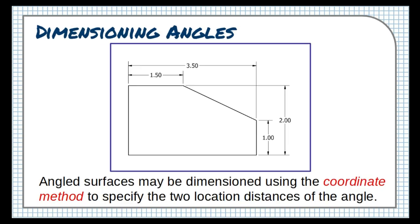When it comes to dimensioning angles, there are two accepted methods. This first method is called the coordinate method, in which both ends of the angled surface are located by their height and width. If the location of both ends of the slope are known, then it's not necessary to include the measure of the angle.